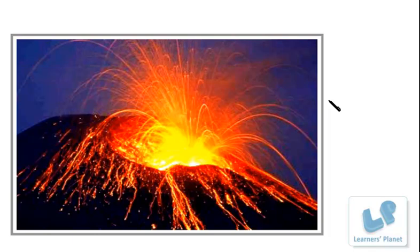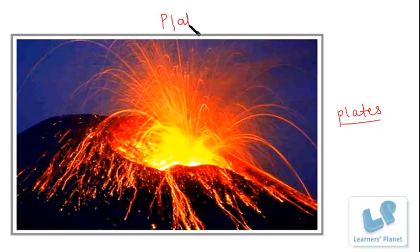The earth's crust is made up of huge slabs called plates, which fit together just like a jigsaw puzzle, and these plates sometimes move. The friction causes earthquakes and volcanic eruptions near the edges of the plates. This theory is called plate tectonics.